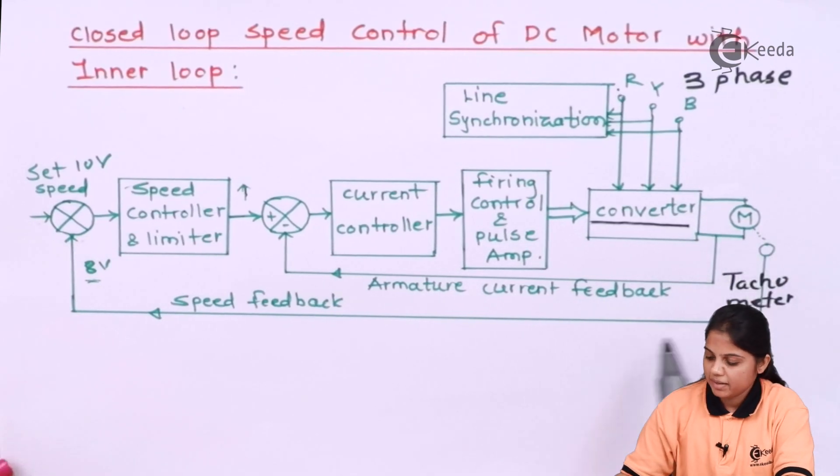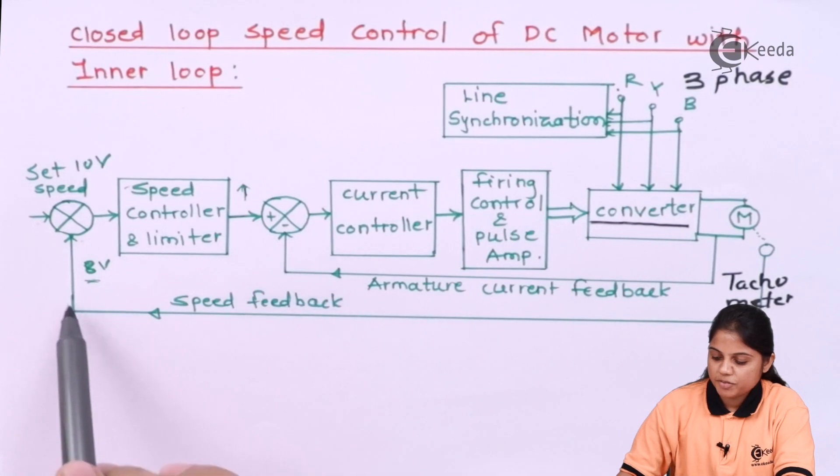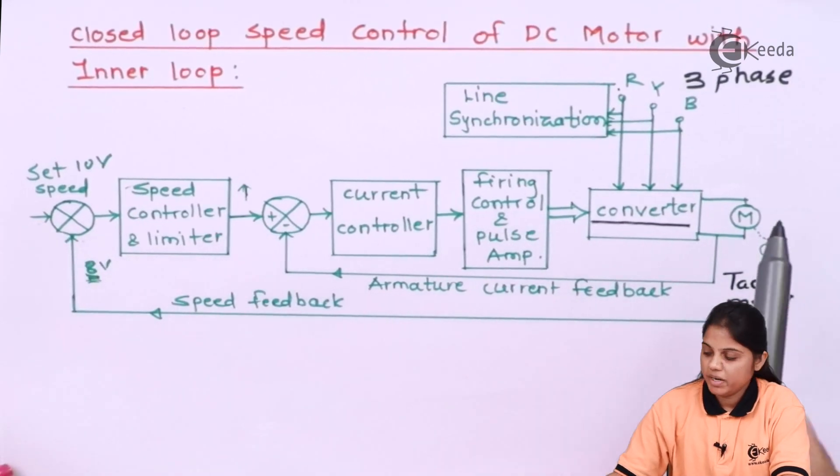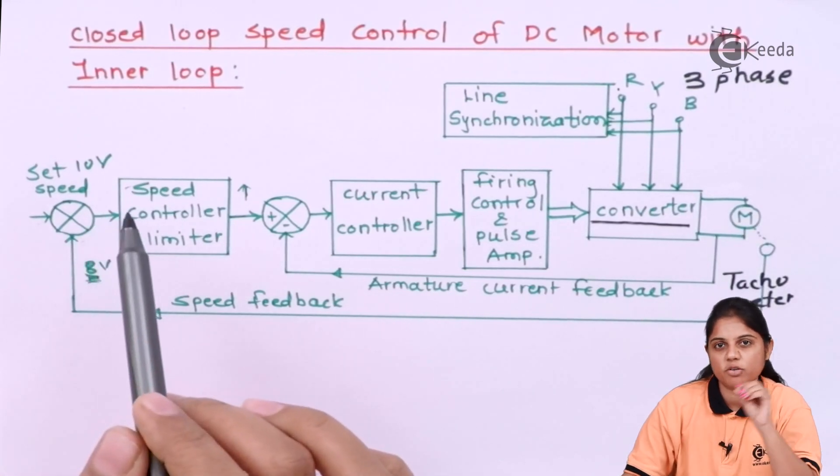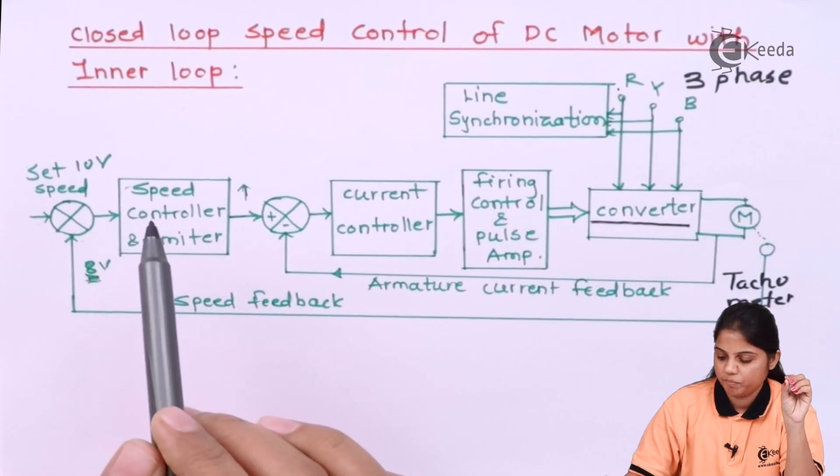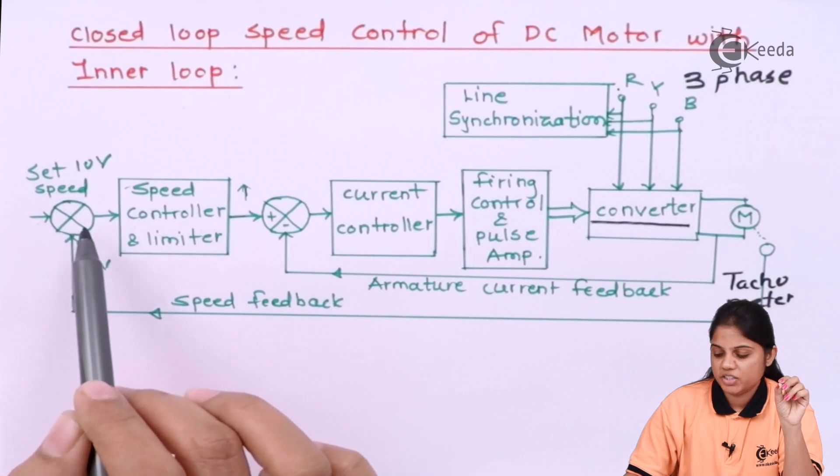So if you are feeding back the speed as well as current, what will happen? If speed is lesser than the required speed, but you are actually working on 10 volt speed only and it is giving you 8 volts because it was reduced for that point of time. So even though if it generates error, it will send the current.